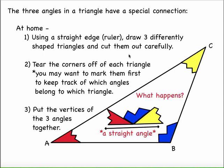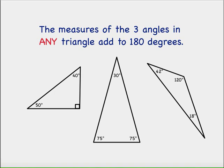Hopefully that happened with your three triangles as well. The point being that every single triangle when you put those vertices together gives you a straight angle. And since we know that a straight angle contains 180 degrees, we can conclude then that the measures of the three angles in any triangle are going to add to 180 degrees.